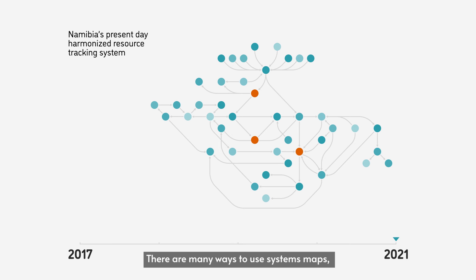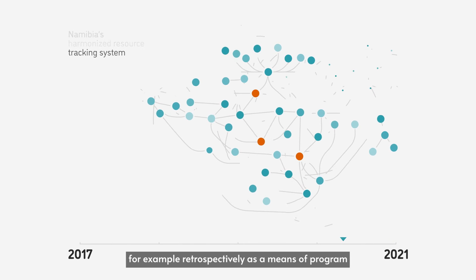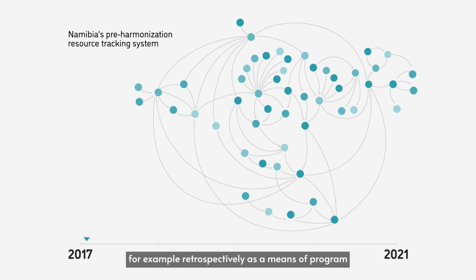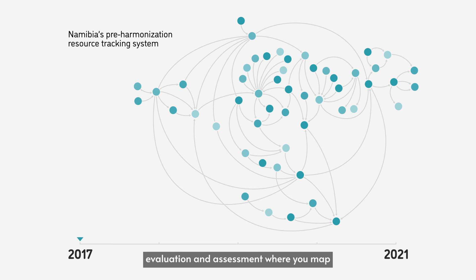There are many ways to use systems maps. For example, retrospectively, as a means of program evaluation and assessment where you map out a system at two distinct points.